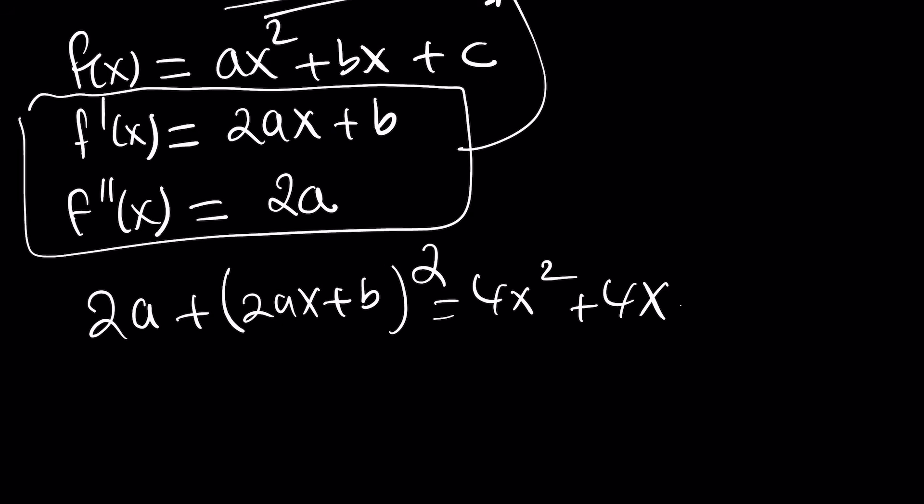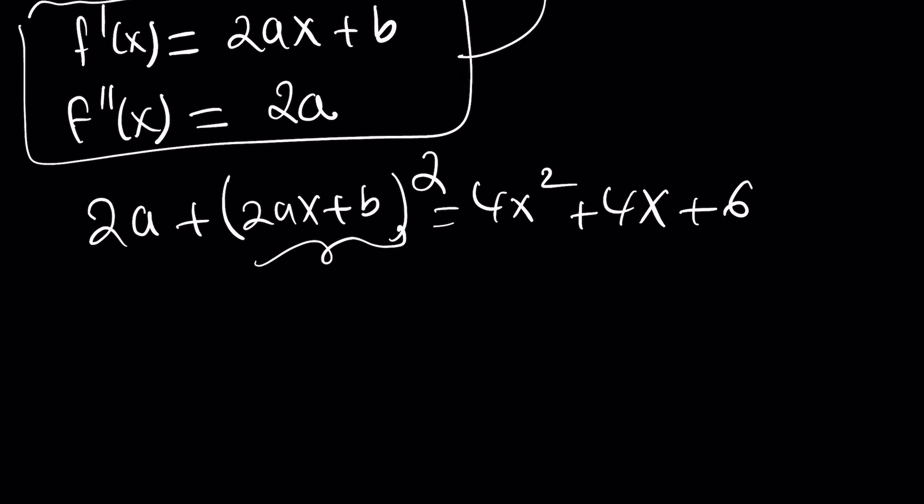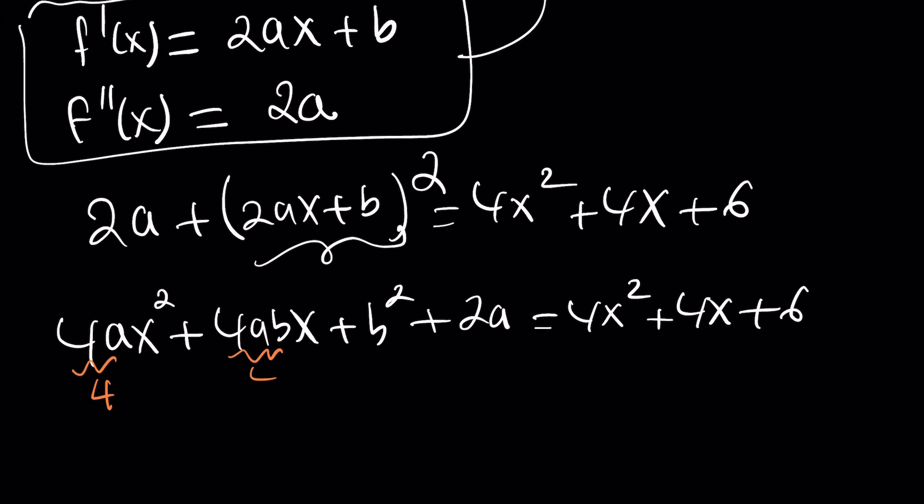We don't need f. We only need f prime and f double prime. f double prime is 2a. f prime is 2ax plus b. We're supposed to square that because here we have f prime squared. And that is equal to 4x squared plus 4x plus 6. Now, is this going to give us a solution? Let's find out. First I'm going to go ahead and expand this. This will become 4ax squared plus 4abx plus b squared. And then I'll have the plus 2a at the end as a constant. And now these are two polynomials that should equal for all values of x. In other words, the coefficients have to match up, which means 4a is supposed to be 4 and 4ab is supposed to be 4, which means a is equal to 1 and b is equal to 1.